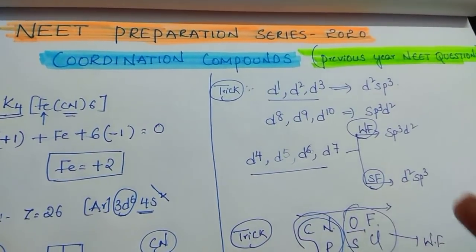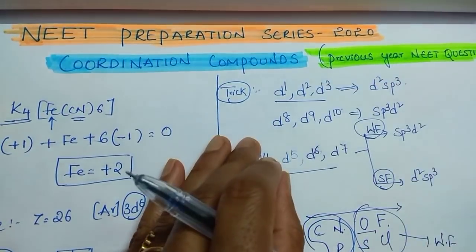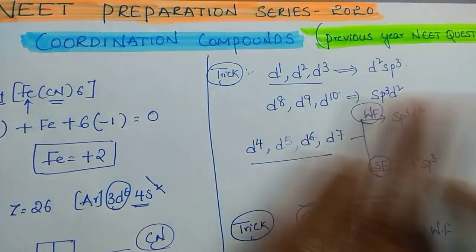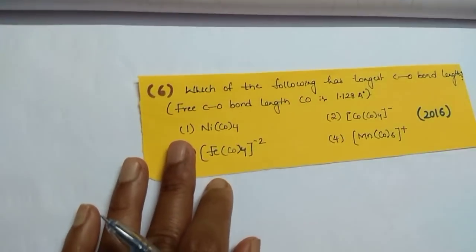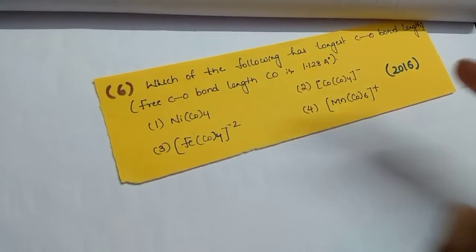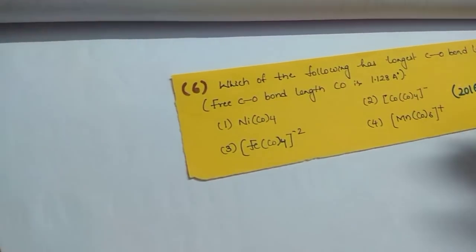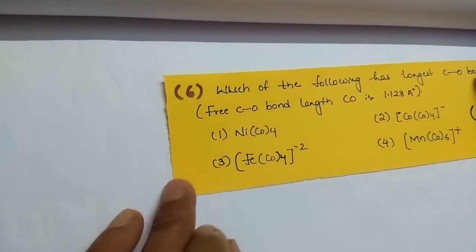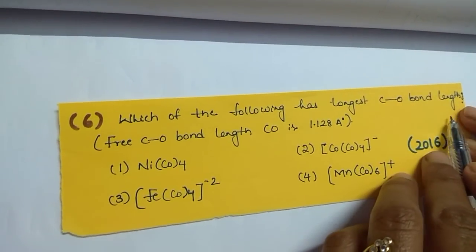Hi students, in a previous video I discussed coordination compounds previous year questions. In this video I am going to continue with the remaining questions, which are very important. I am going to cover two to three different models which gives you a clear idea so you can solve other questions easily. Which of the following has the longest C-O bond length?